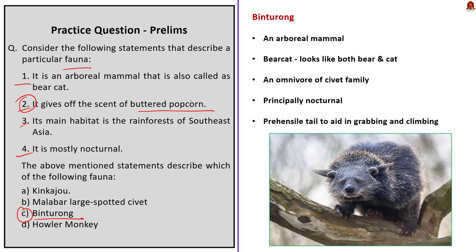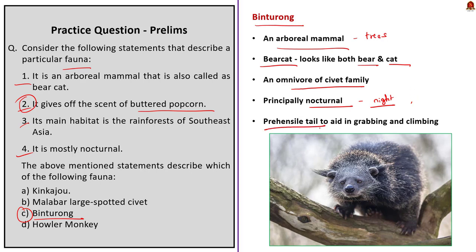The Binturong looks part bear and part cat. It is an arboreal mammal — meaning it lives in trees — and is an omnivore of the civet family. Binturong is principally nocturnal, awake and active at night and sleeping during the day. It uses its prehensile tail as an aid in climbing. The prehensile tail means it is capable of gripping things. Contrast this with the slender loris mentioned in the October 2022 compilation, which has a vestigial tail that is merely ornamental. The prehensile tail of the bear cat is actually used for gripping and climbing.